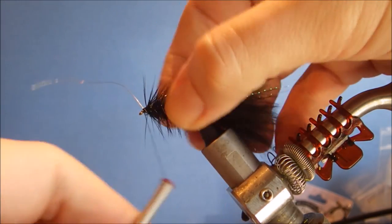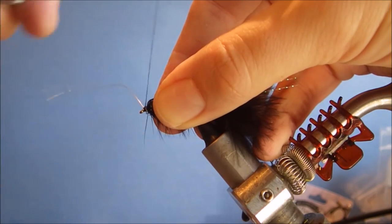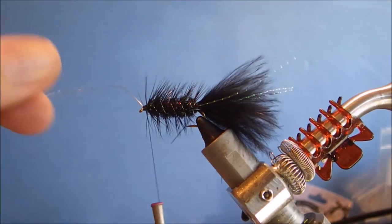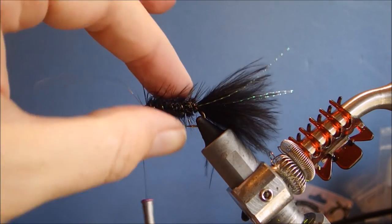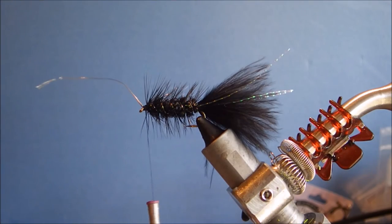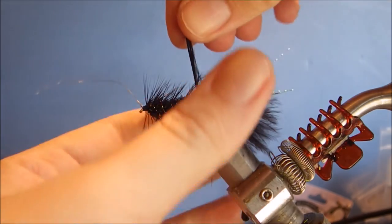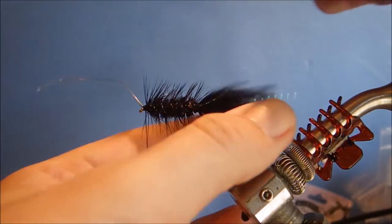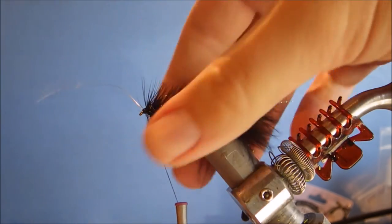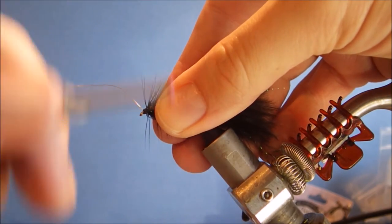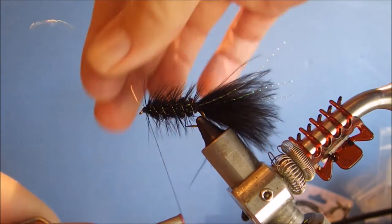So that even if a trout does get its teeth in and snip the stem, the feather won't just completely unravel. You can snap that and the hackle stays well tied in.